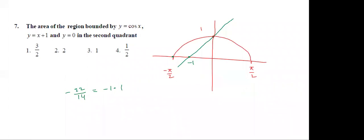So the line sits between the cos x curve and y = 0. y = 0 is the x-axis. The required area is this region. This side is 1 unit and this is also 1 unit.